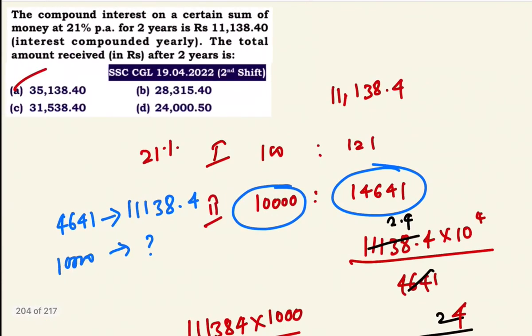If you don't want to do this long method, you can use approximation. You don't need to go through all options — just find the total amount received directly.